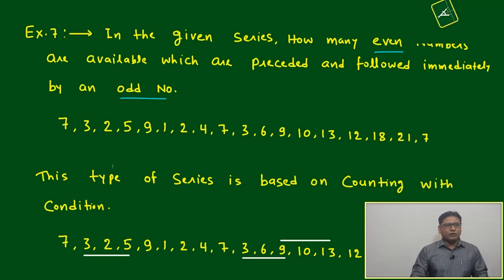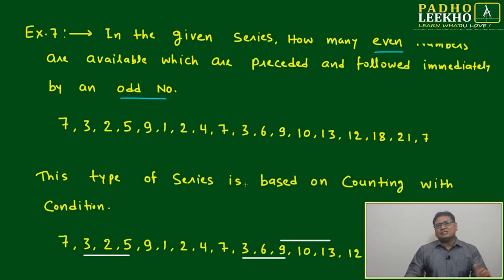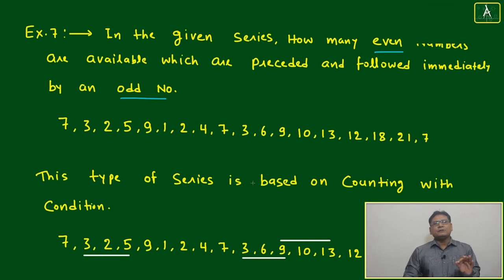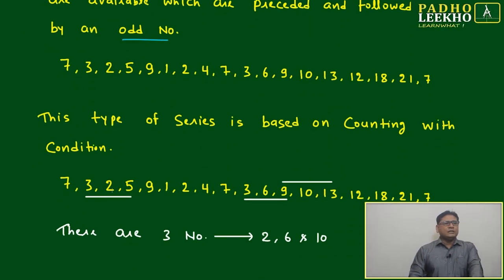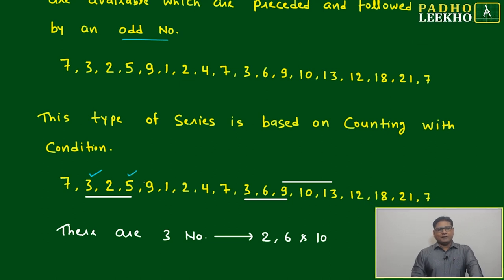We have to find first all the even numbers, and afterwards check just before and just after - it must be an odd number. If it's not an odd number on both sides, it will not count. Both sides must be odd numbers. Here, two is perfectly fine - it is preceded by three and followed by five.